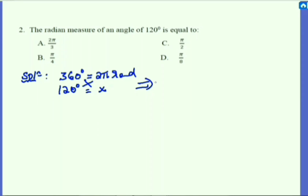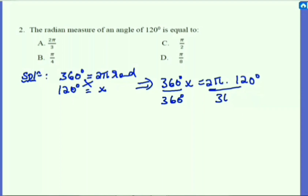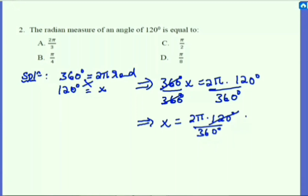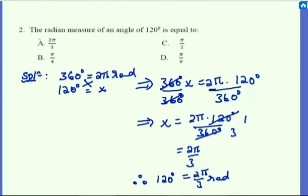Multiply 120 by 2π radians; this must equal 360 degrees times x. So 360 degrees × x = 2π radians × 120 degrees. Dividing both sides by 360 degrees, we get x = 2π × 120 / 360. Simplifying: 120 over 360 reduces to 1 over 3, giving 2π/3. Therefore, the radian measure of 120 degrees is 2π/3 radians. Our answer is choice A.